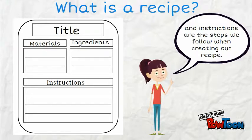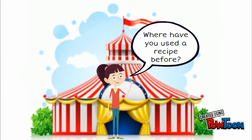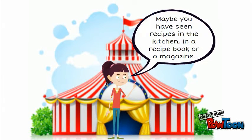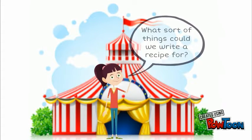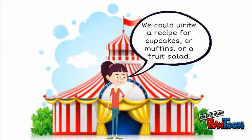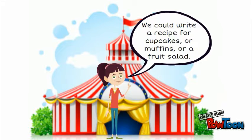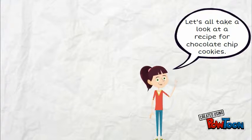Instructions are the steps we follow when creating our recipe. Where have you used a recipe before? Maybe you have seen recipes in the kitchen, in a recipe book, or in a magazine. What sort of things could we write a recipe for? We could write a recipe for cupcakes, or muffins, or a fruit salad.